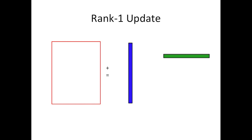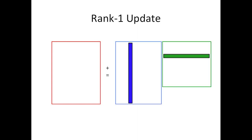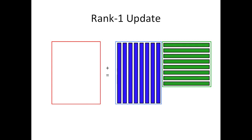The setting in which we're going to do this rank-one update is where the column vector is actually a column of A and the row vector is actually a row of B. We're going to do many rank-one updates, one with each pair of a column of A with the corresponding row of B. The ij entry of C is updated by taking the dot product of the i-th row of A with the j-th column of B.